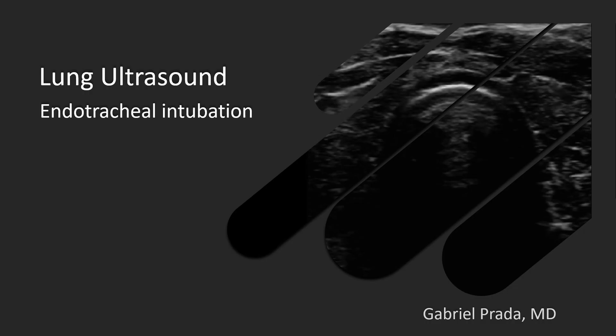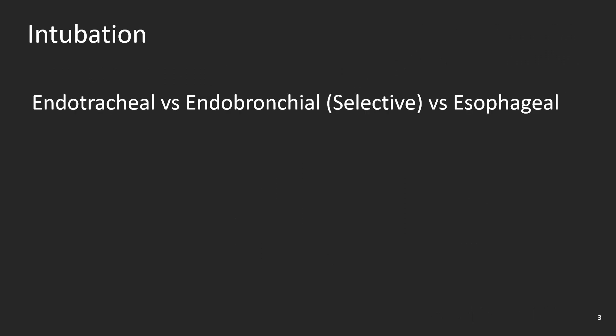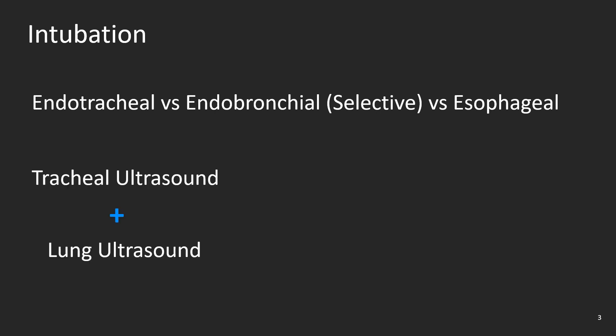Hello and welcome back to the ICU doc. This is Gabriel Prada and here is a quick lecture about lung ultrasound for endotracheal intubation. During intubation we can use ultrasound to find out whether the tube is in the trachea, a main stem bronchus, or the esophagus. For this purpose we need to combine simple but accurate tracheal and lung ultrasound techniques.